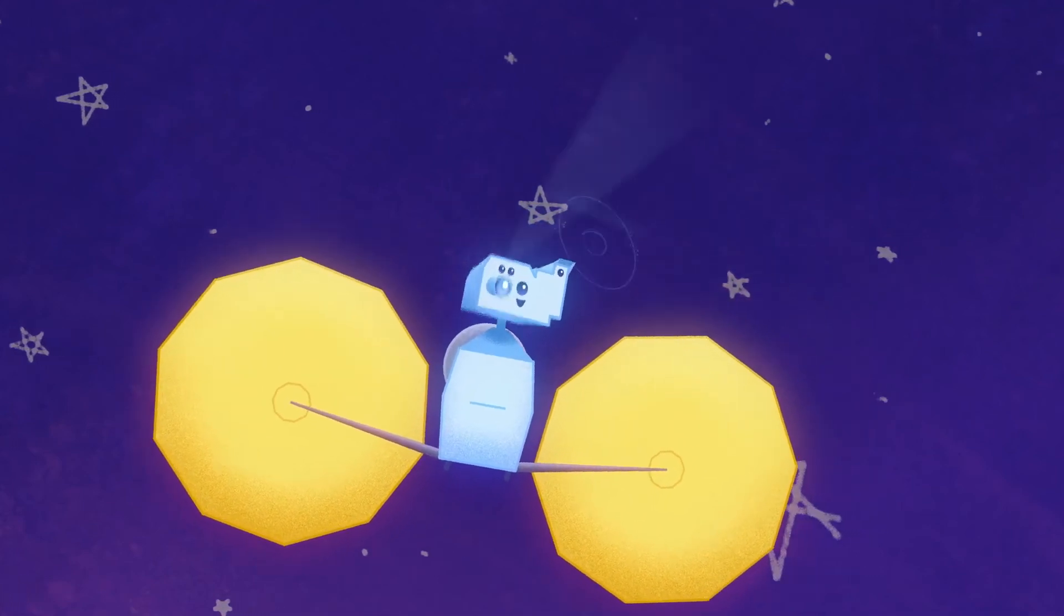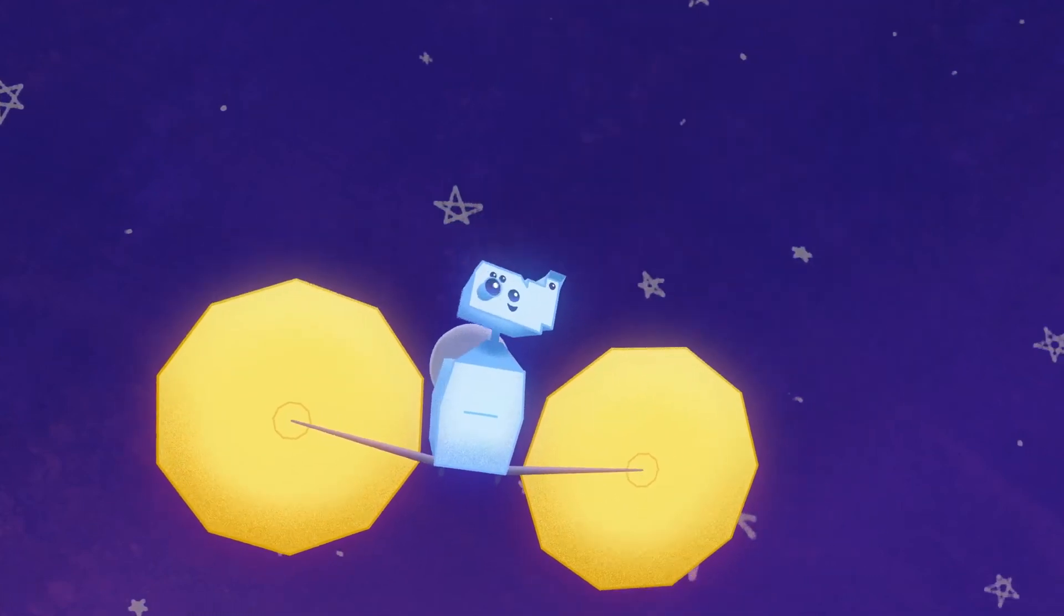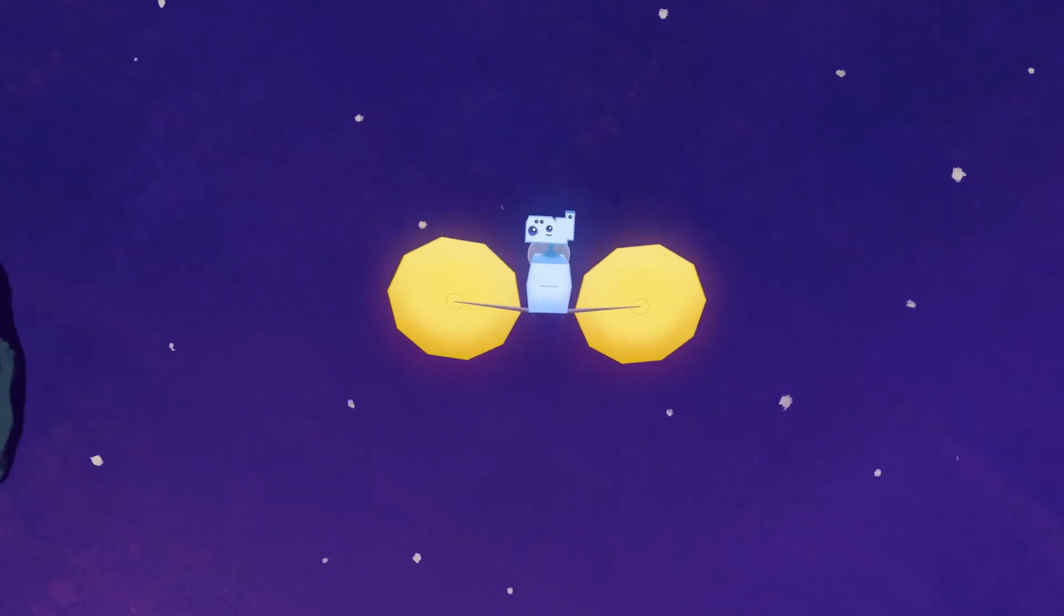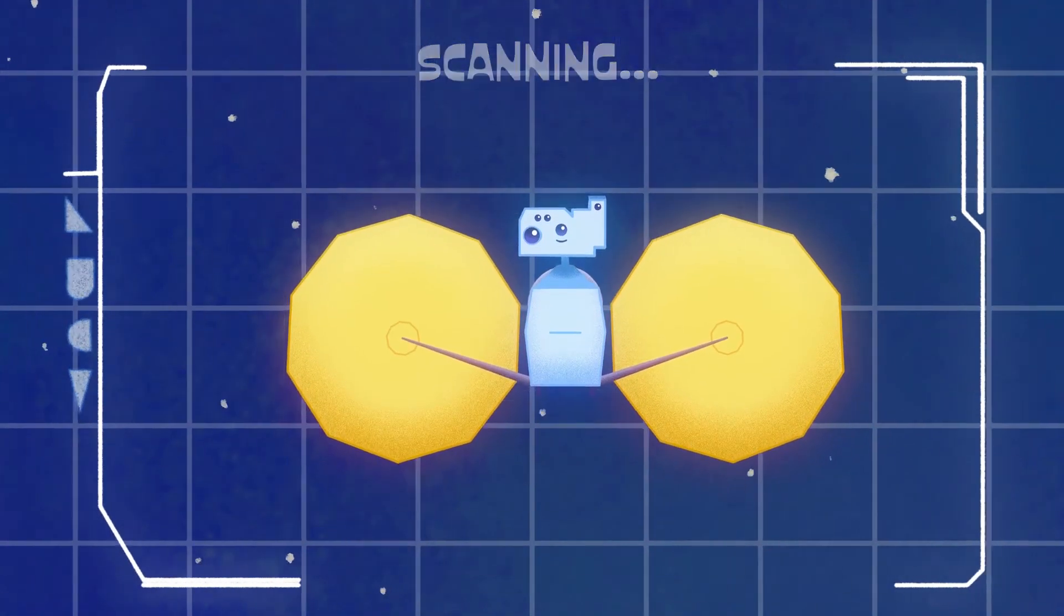But it looks like you're coming up to the main belt asteroid, Donald Johansson. Right, this will give you a chance to check in on your instrumentation before you get out to the Trojans.